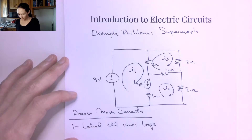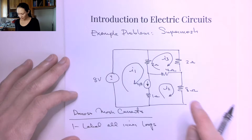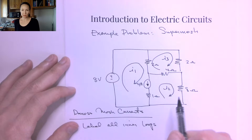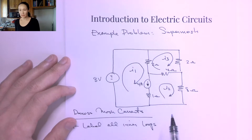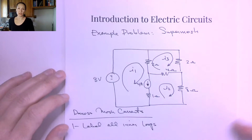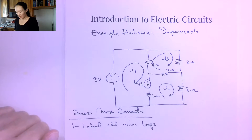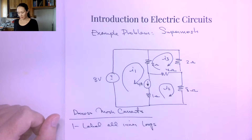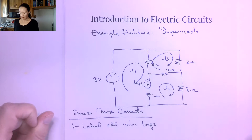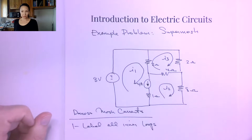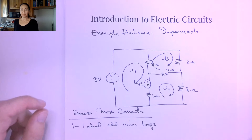It doesn't matter too much which direction your arrows go. You just need to pick a direction, and then when we make our equations, it'll handle whether that is the way the current is actually flowing in the circuit.